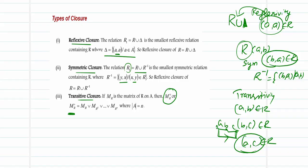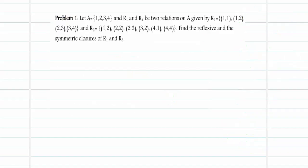Now let us try our hands at finding the reflexive and symmetric closures of given relations. Let A be the set {1, 2, 3, 4} and let R1 and R2 be two relations which have been given.